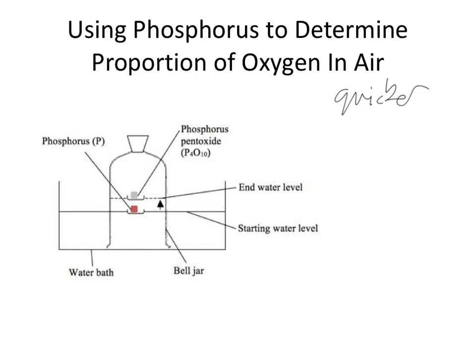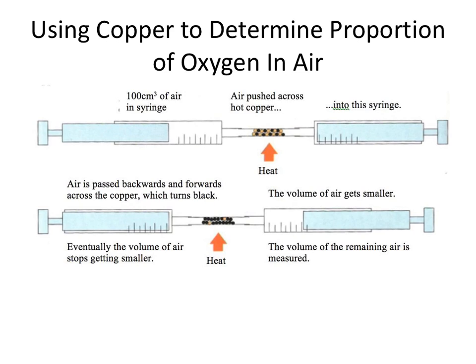Let's have a look at the third and final experiment which uses copper. Here is an experiment I've done every year for the last 15 years or so. What we have are two gas syringes connected by a piece of pipe that has some copper inside it. At the start of the experiment, we have 100 cm³ of air in one syringe and zero in the other syringe. What happens is you push down on the plunger of this gas syringe and that forces the air in that syringe across the copper, and that pushes this gas syringe out the other way.